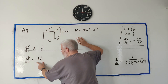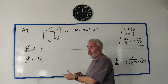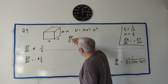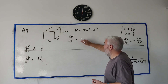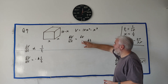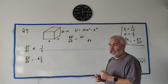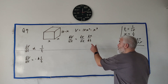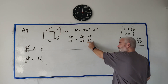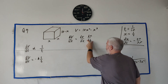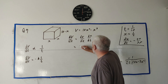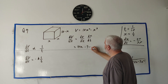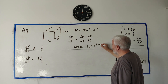We want dV/dt, but V is expressed in terms of x. I can use the chain rule: dV/dt = dV/dx · dx/dt. Since x is the obvious choice, I differentiate V = 10x² − x³ with respect to x, giving dV/dx = 20x − 3x². So dV/dt = (20x − 3x²) · dx/dt.